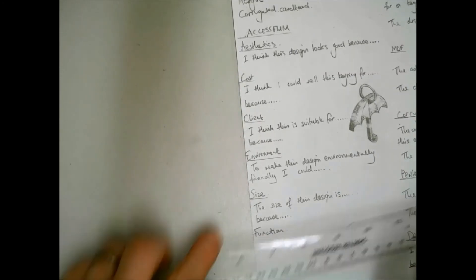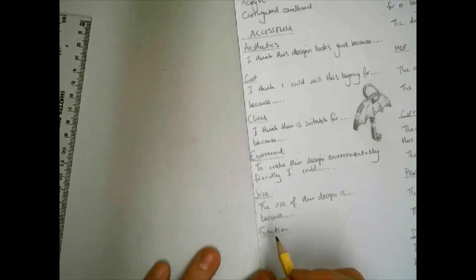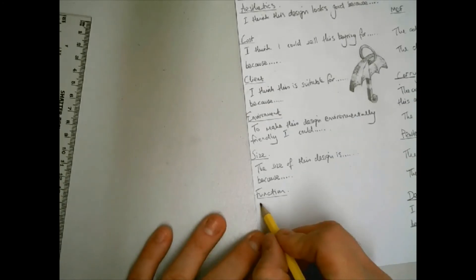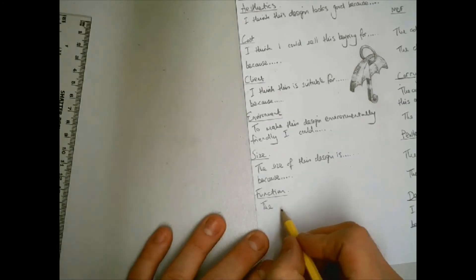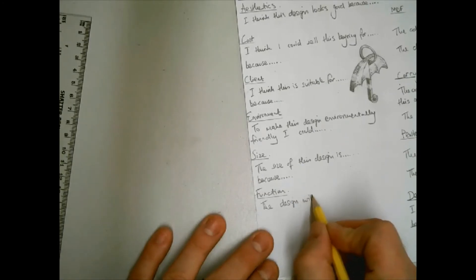The seventh letter is F. This stands for function. This relates to how my product works. The things to think about at this stage are will the product do what it is supposed to do? How does it work? Could you make it easier to use?